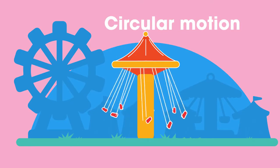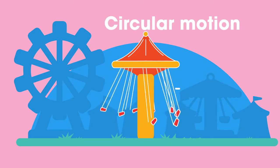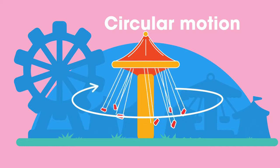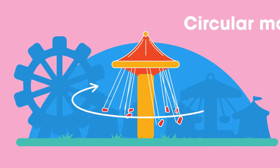In this video, we will explain why an object moving in a circle with a constant speed has a changing velocity.